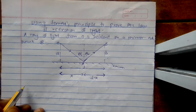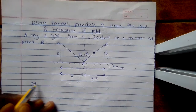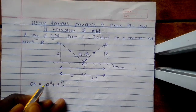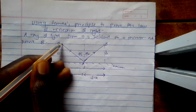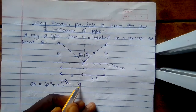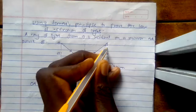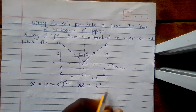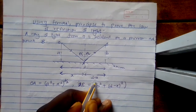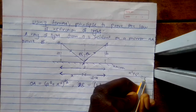If I want to get OA, then OA will be (a² + x²)^(1/2) from the Pythagorean theorem. Then also, if I want to get AB, AB is equal to (b² + (D minus x)²)^(1/2). That follows from the Pythagorean theorem: a² + b² = c², so c = (a² + b²)^(1/2).